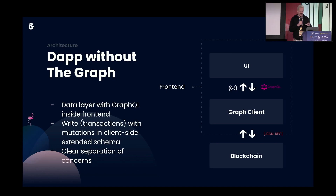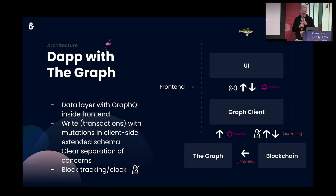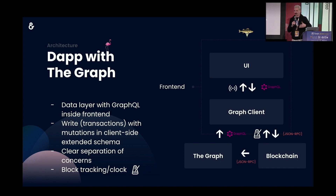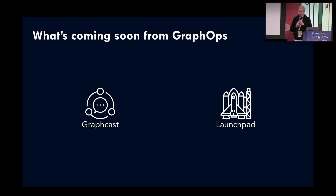The Graph Client can also be used to interact directly with the blockchain, including writing mutations. With a dapp using The Graph and the Graph Client for mutations, you have a powerful real data layer where reading and writing are unified. It helps send transactions to the blockchain and handles block tracking so you're always up to date. If you're a data consumer or front-end developer, you should definitely check out the Graph Client.